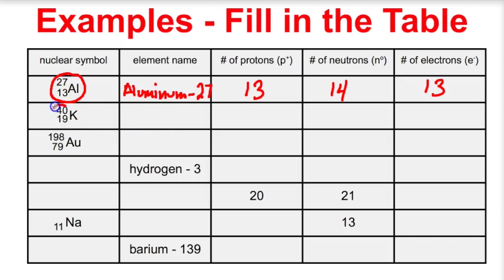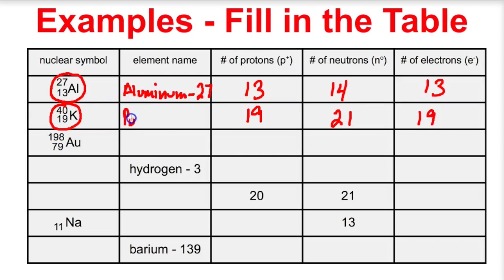Let's take a look at this isotope of potassium. Its atomic number is 19, so it's going to have 19 protons and 19 electrons. If we take the mass number minus the atomic number, we end up with 21 neutrons inside of its nucleus. The name of this isotope is potassium-40 — the mass number is 40.